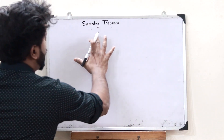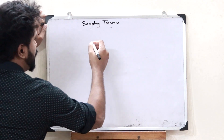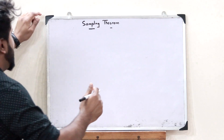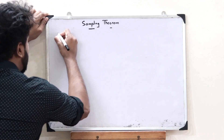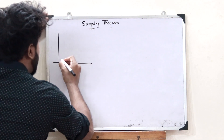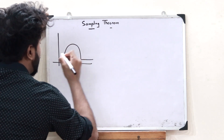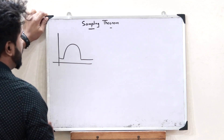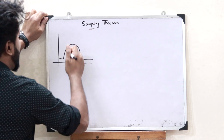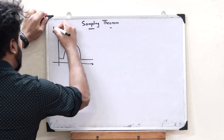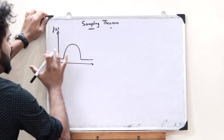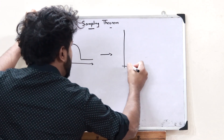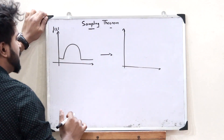Before we go into what you refer to as sampling theorem, we have to first know what you refer to as the term sampling. What do you mean by sampling? For that, let us consider a particular analog signal like this. This is an analog continuous time signal. For the purpose of converting this particular continuous time signal onto a discrete time signal, that is when we use sampling.